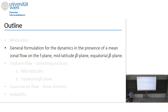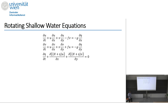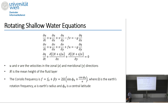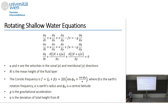We start with a general formulation for the dynamics of the problem in Cartesian coordinates, which may be on the F-plane, mid-latitude beta plane, or equatorial beta plane. We start with the rotating shallow water equations, where u and v are the velocities in the zonal and meridional directions, h is the mean height of the layer, f is the Coriolis frequency, omega is the rotation frequency, a is the Earth's radius, phi_0 is some central latitude, g is the gravitational acceleration, and eta is the deviation of the total height from the mean height H.